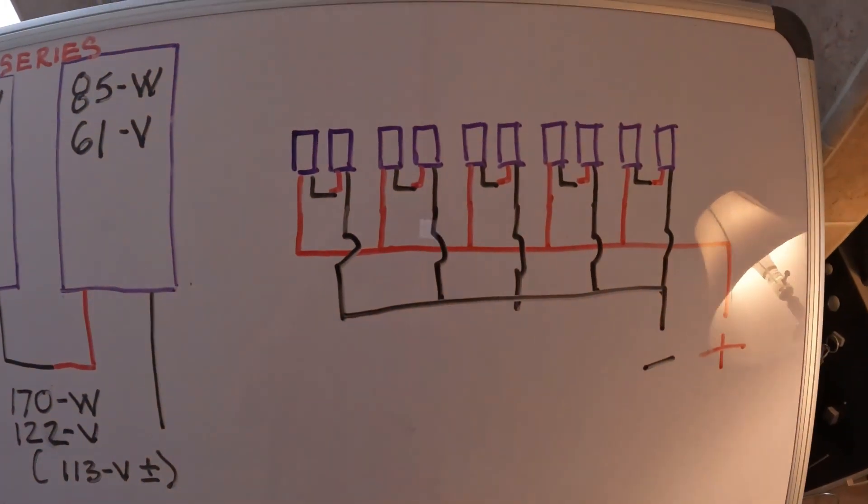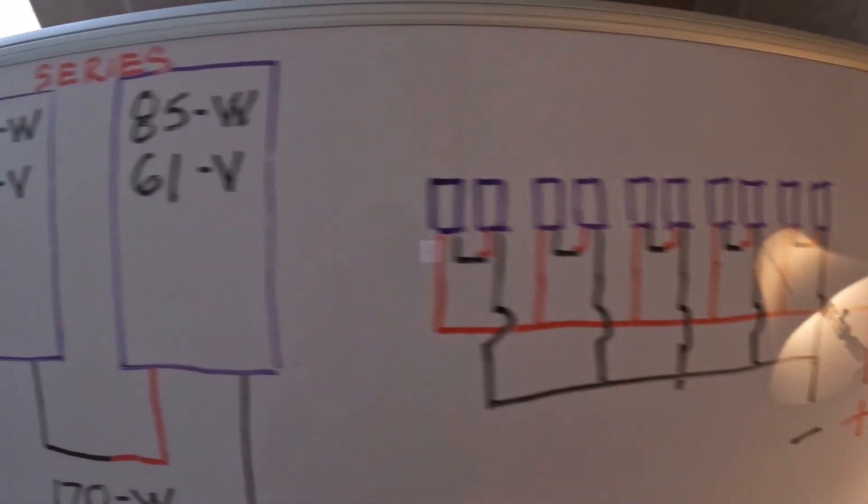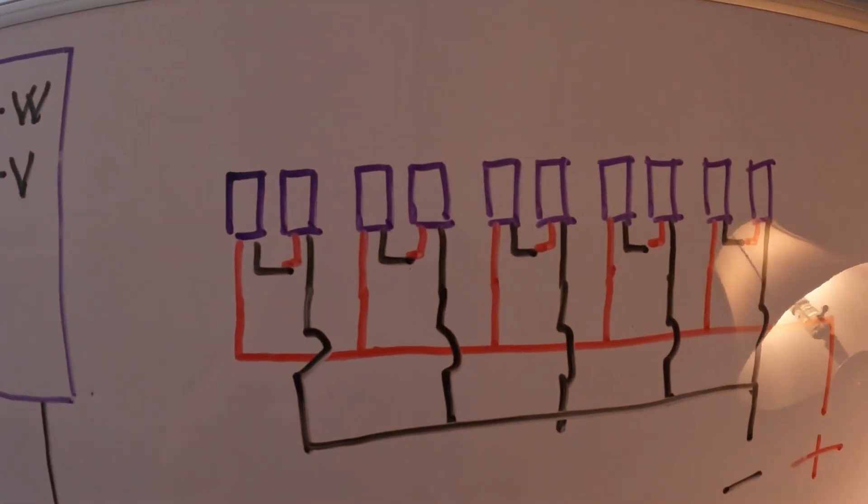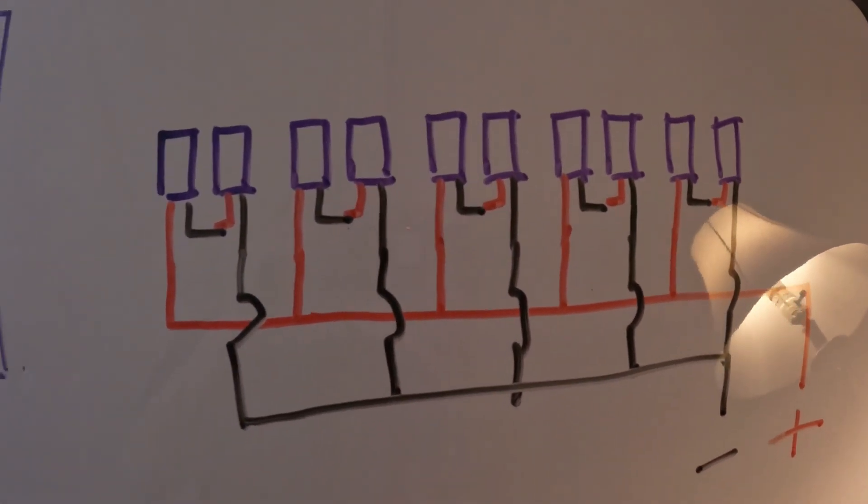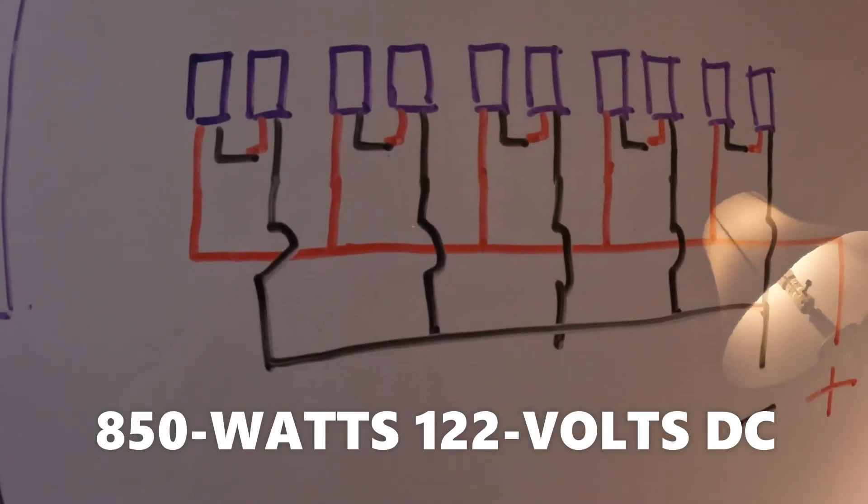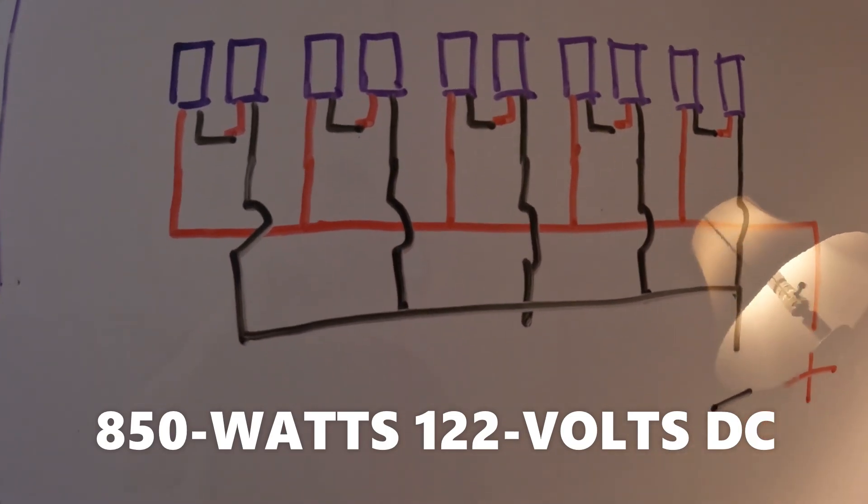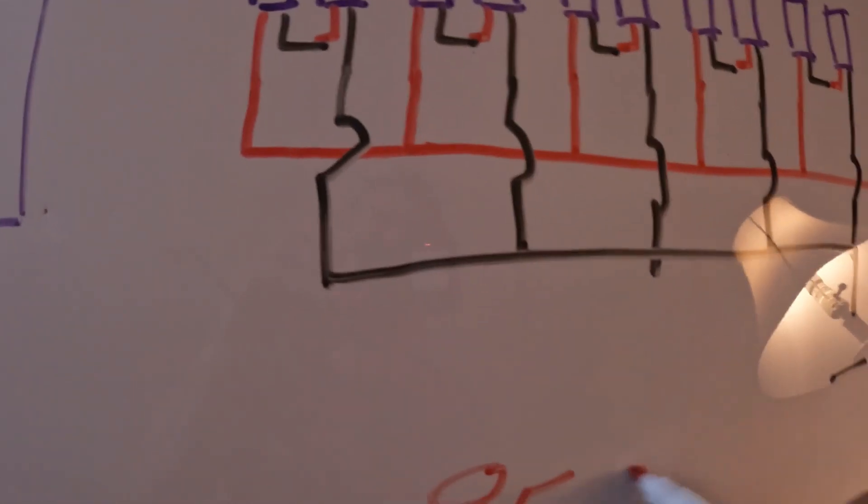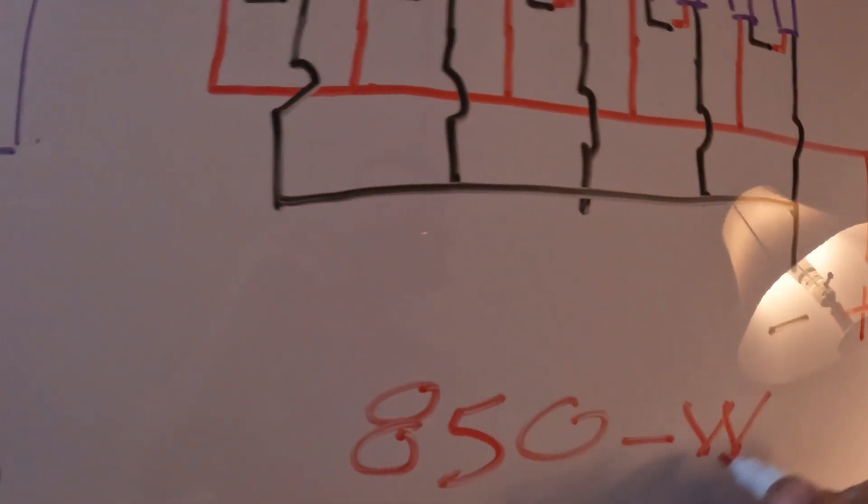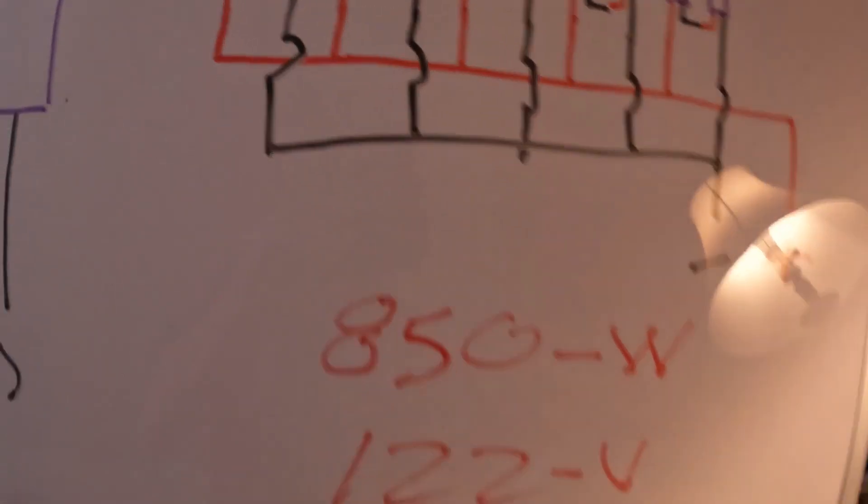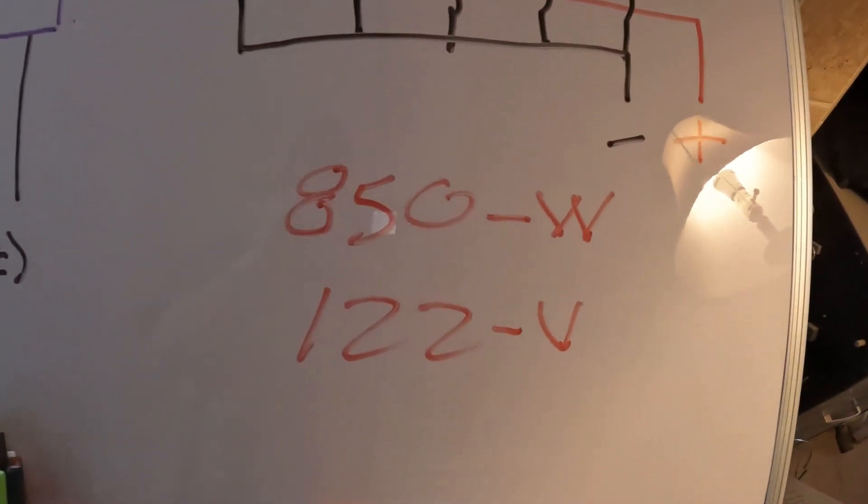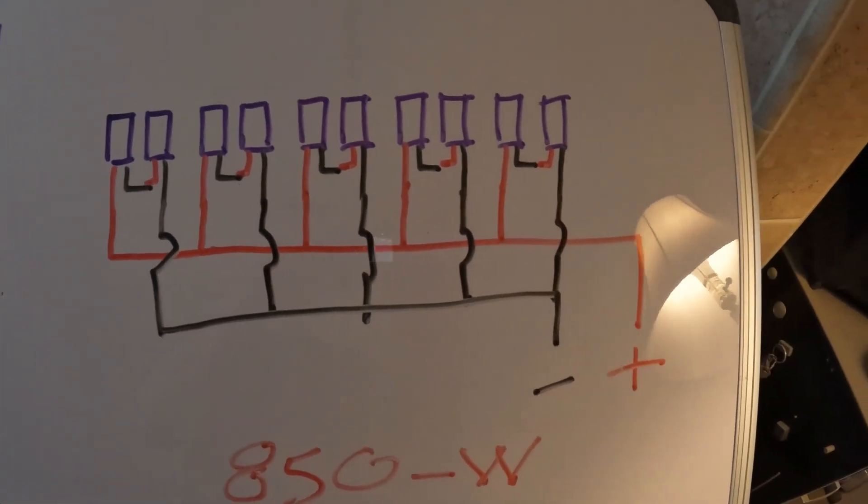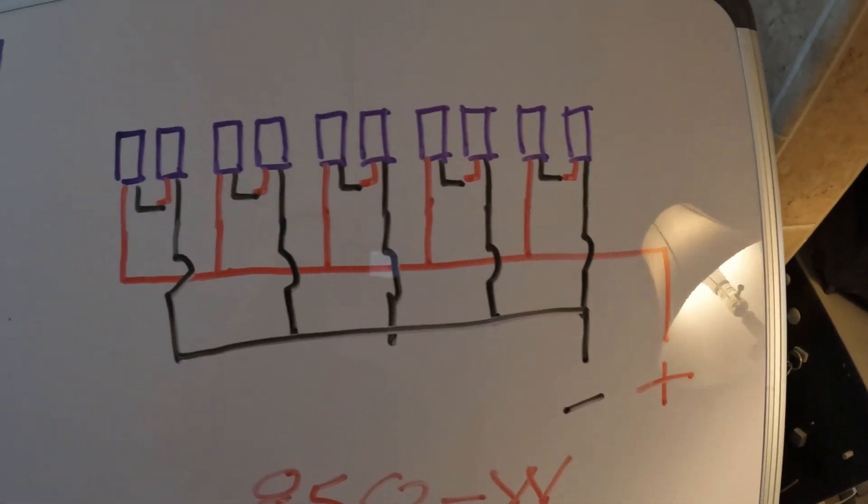Here's how they're wired up in parallel - each one of these series sets are all wired in parallel to create a total of 850 watts at 122 volts. That's a little rough diagram, but I think you can see what I'm getting at.